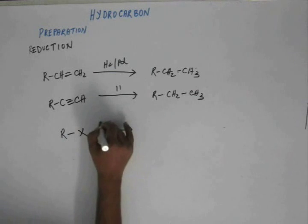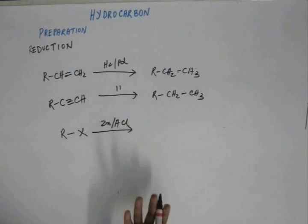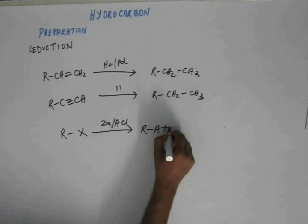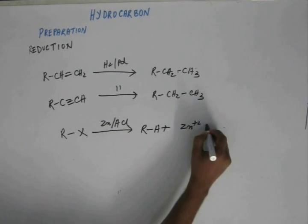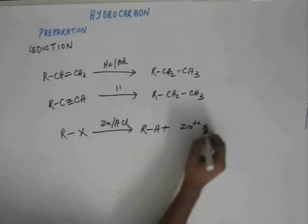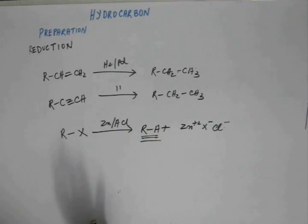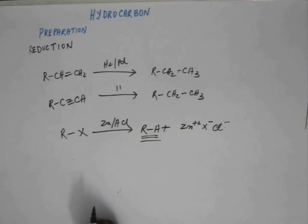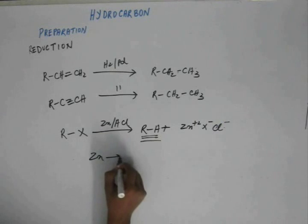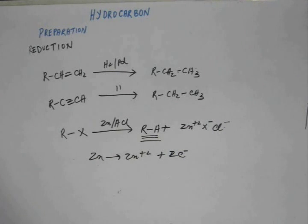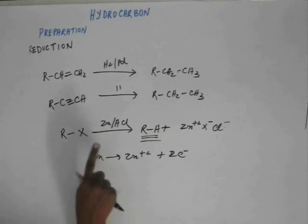If we have an alkyl halide and we add zinc in dilute hydrochloric acid, we get the corresponding alkane, along with Zn²⁺ ion, X⁻ ion, and Cl⁻ ion. This gives us the alkane. The reason is zinc is an active metal with a relatively lesser tendency to form a complex, so zinc loses electrons, forming Zn²⁺, and those two electrons go into the anti-bonding orbital.